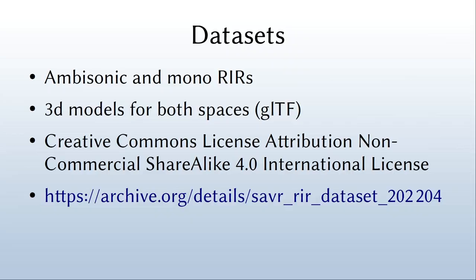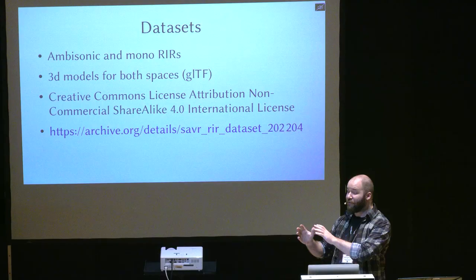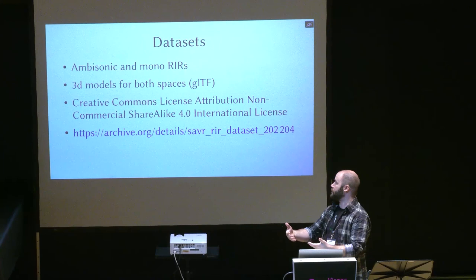Finally, the datasets. The two most important things: firstly, the license — essentially anyone is free to use them for non-commercial purposes. Secondly, while there are a few datasets of ambisonic impulse responses out there, I haven't seen any that include plans, 3D models, or information about the room itself. We do provide 3D models of both rooms, which are to scale and accurate.